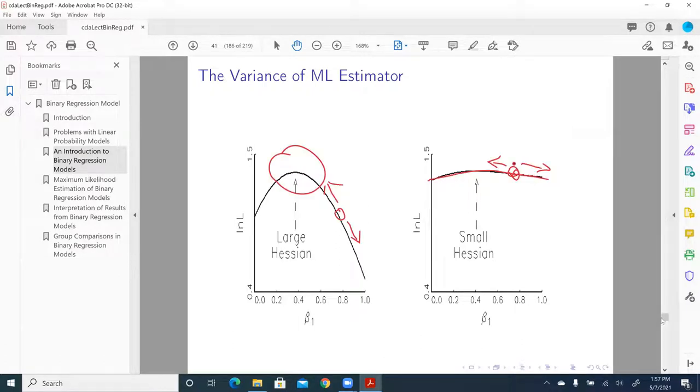For the descent method, or for the gradient method, you go up and you go down, you can see huge difference. But for a flatter, much flatter likelihood function, it's pretty hard to find answers here.